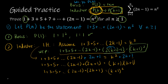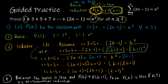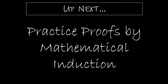The very last thing to do is state: because the basis is true and P of K implies P of K plus 1, then P of N is true for all N greater than or equal to 1 by mathematical induction. That is a complete proof with all the parts you need. In our next video, we're going to focus on doing some practice proofs by mathematical induction.